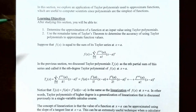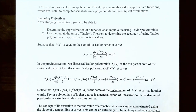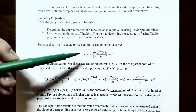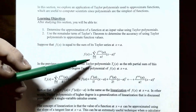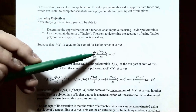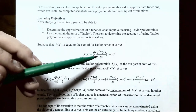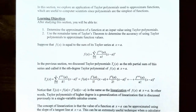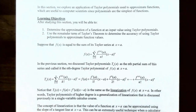Suppose we have a function f(x) and we know that f(x) is actually equal to the sum of the Taylor series at x equals a. So f(x) can be written as a Taylor series: the sum from n equals zero to infinity of the nth derivative of f evaluated at a, divided by n factorial, times the quantity (x − a) to the nth power. This is the Taylor series for f(x).